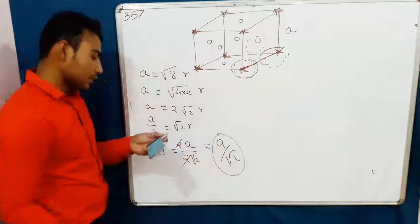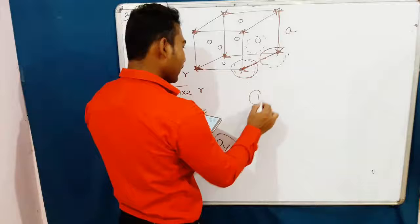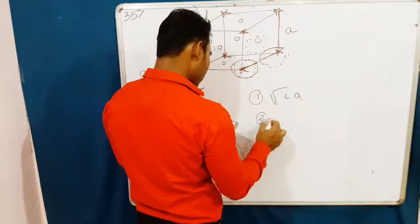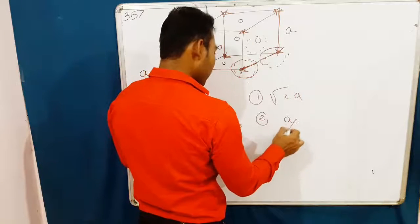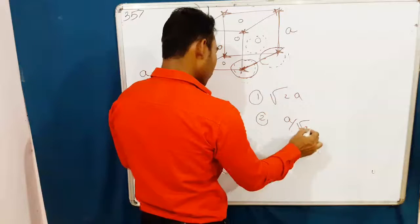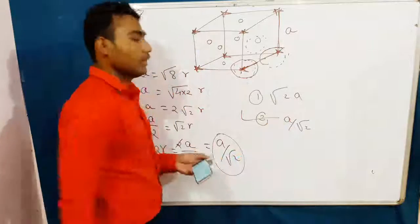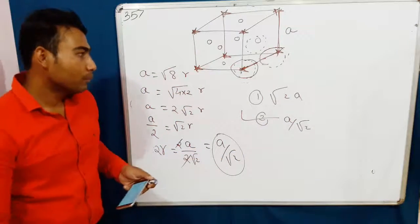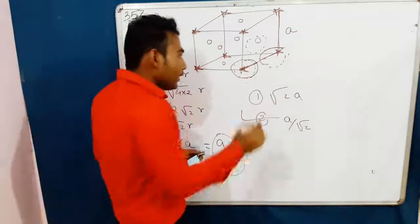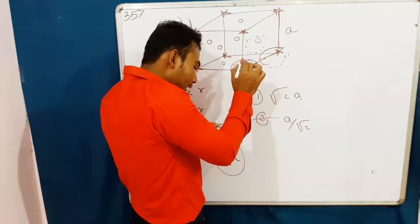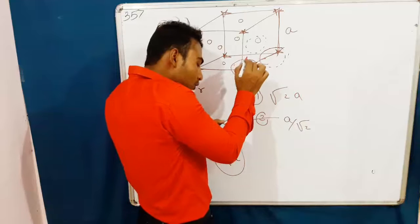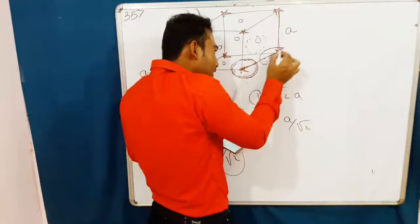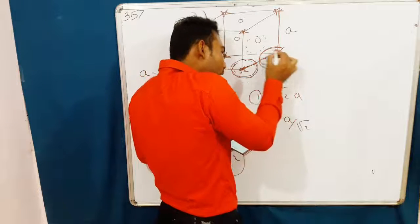Looking at the options: Option 1 is root 2 A, and Option 2 is A by root 2. Option B is correct. The question asked for the closest approach between two atoms — the distance between two atoms in the metallic crystal is A by root 2.